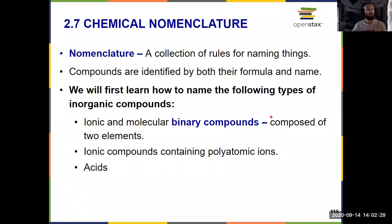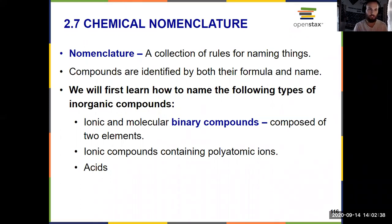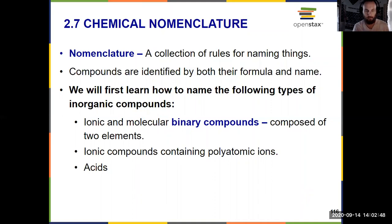The first step in naming is to figure out exactly what we have, because we have different sets of rules for naming each type of thing. Nomenclature is a collection of rules for naming things, because a compound could be identified by both its name, if you hear it spoken, or its formula, if you see it written. And sometimes to go shorthand, we just say the formula, saying CO2 instead of carbon dioxide.